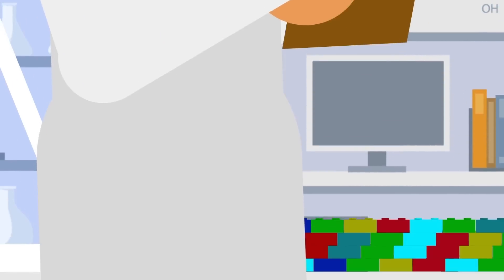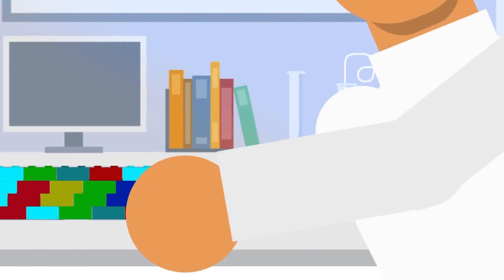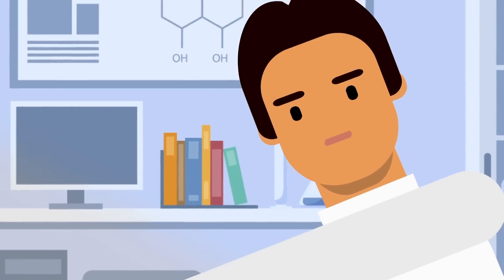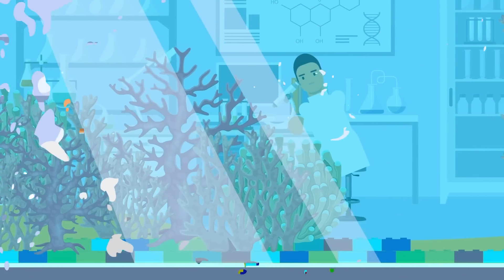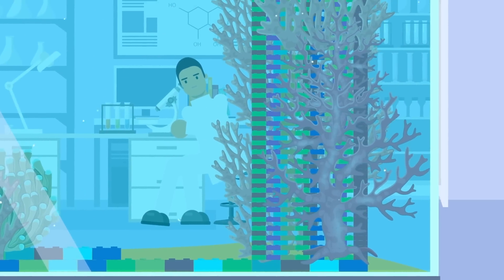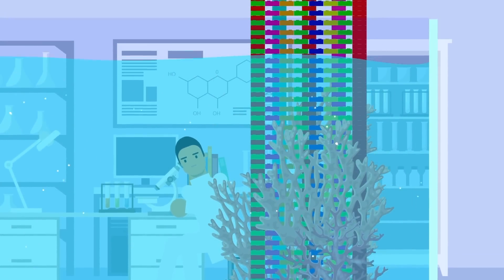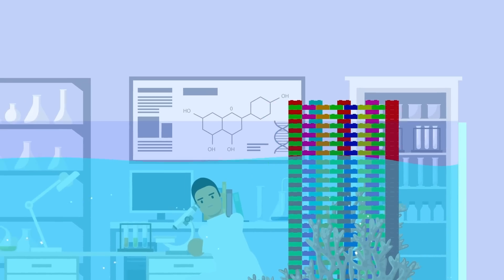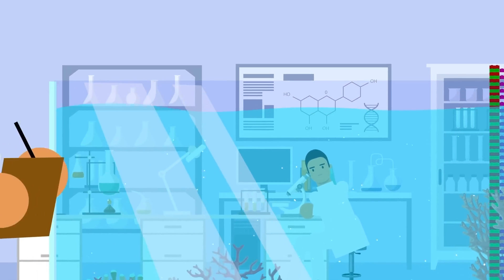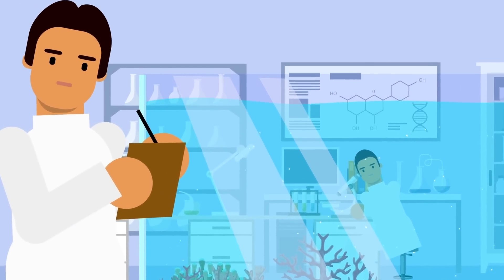But not all seascapes are conducive to the growth of reefs, so scientists in Singapore construct the structures necessary for the corals to thrive. If coral needs to grow outwards, the researchers can build a Lego platform to help it create a solid base. Then if the coral needs to grow taller to receive more sunlight, the scientists can build a Lego tower for the corals to grow up, like the skeletal frame of a skyscraper.